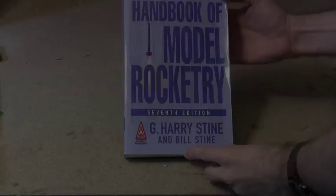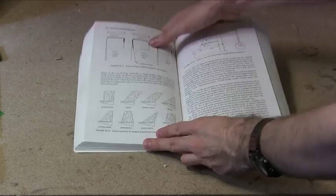G. Harry Stein's Handbook of Model Rocketry has a nice illustration of various fin shapes we can use. I prefer the shape known as the clipped delta. It is simple to cut and doesn't have any sharp, easily damaged corners.